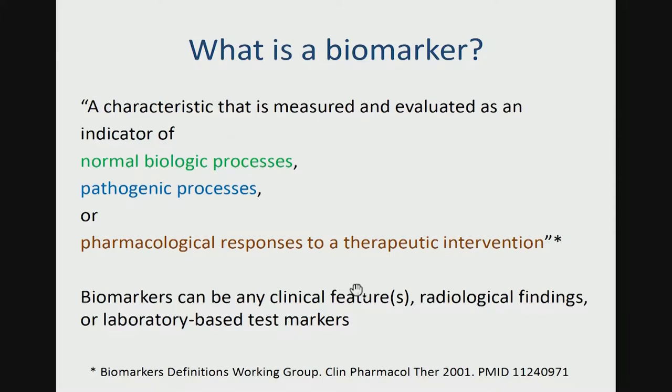So what is a biomarker? It's a characteristic that is measured and evaluated as an indicator of normal biologic processes, pathogenic processes, or pharmacological responses to a therapeutic intervention. It's not just pathogenesis — it can indicate biomarkers of normal development or of therapeutic response. And this can be any clinical feature, radiologic feature, or laboratory-based test marker. It doesn't necessarily need to be a blood sample for a cytokine; it can even be a radiographic feature.